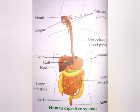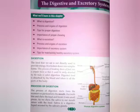The process of digestion starts from the mouth. Our teeth chew the food and break it into small pieces. As we chew the food, the saliva in our mouth mixes with the food. Our saliva contains digestive liquid which is secreted from the salivary glands.